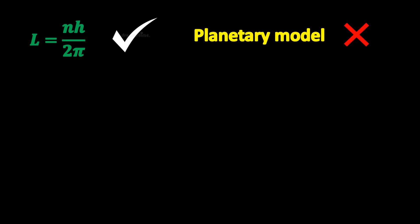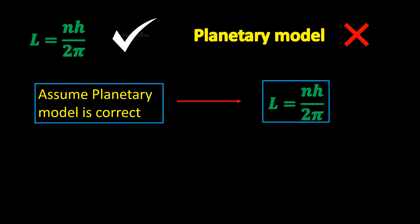We started by establishing that all physicists agree on the fact that the Bohr model is correct, and the planetary model is wrong. Now, we assumed that the planetary model is correct, and by that assumption, we have derived the Bohr model. If the planetary model was wrong, we wouldn't have been able to arrive at this correct result, but the fact that we have implies that the planetary model is correct.